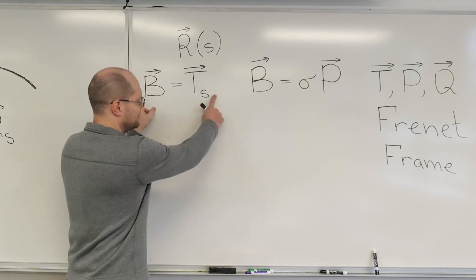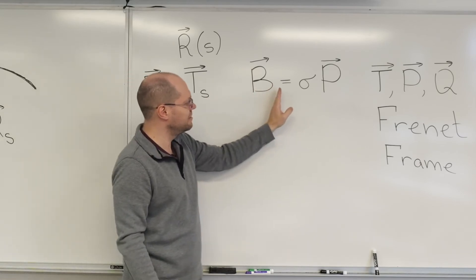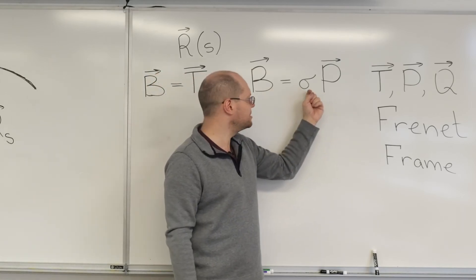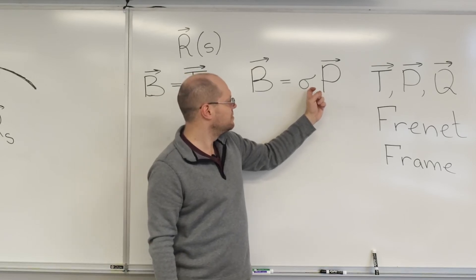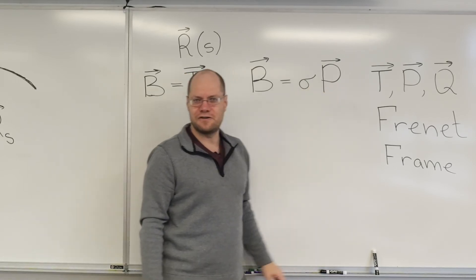B, by virtue of this definition, is a function of the arc length, and then you split it into a scalar and a unit vector. So, of course, the scalar is a function of the arc length, and P is a function of the arc length.